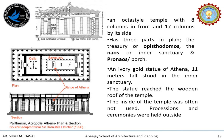The statue reached the wooden roof of the temple. The temple's altar was placed on the eastern side. Processions and ceremonies were often held outside and the inside of the temple was not generally used. During the Christian period the Parthenon was used as a church, and later the Turks converted it into a mosque.